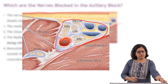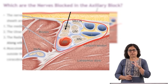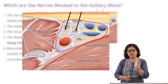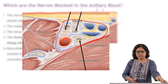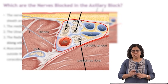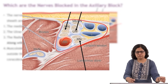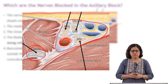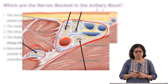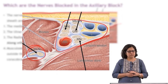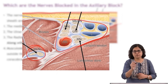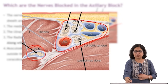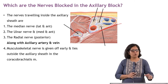The median nerve is situated anteriorly and laterally, the ulnar nerve anteriorly and medially, and the radial nerve is posterior to the artery. The musculocutaneous nerve is not within the axillary sheath — it is given off early and lies outside the sheath within the coracobrachialis muscle. Therefore it must be infiltrated separately, while a single injection in the axillary sheath will block the other three nerves.